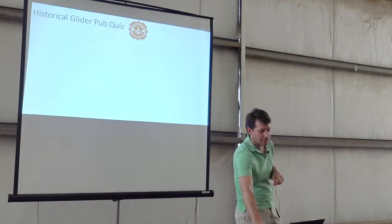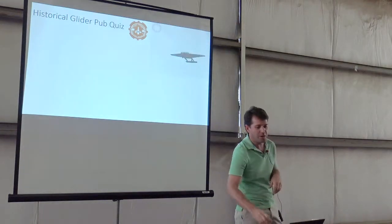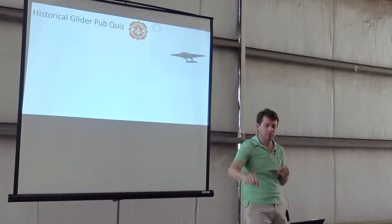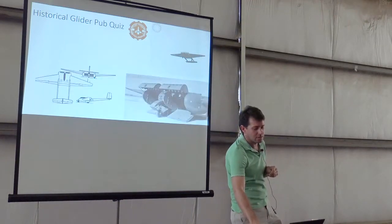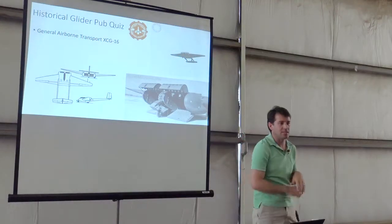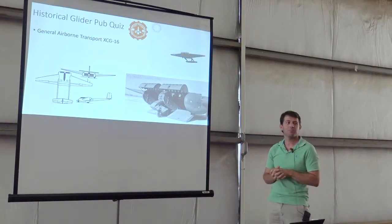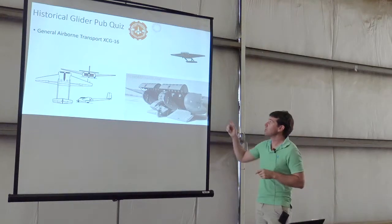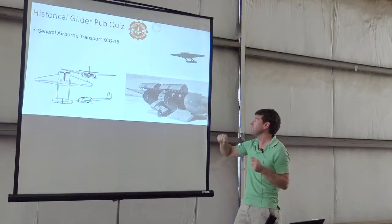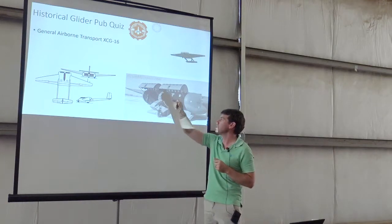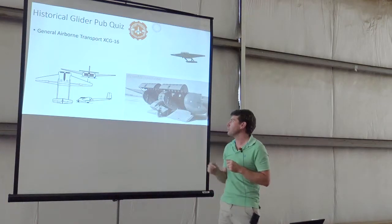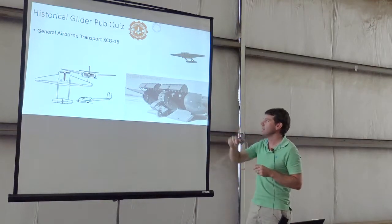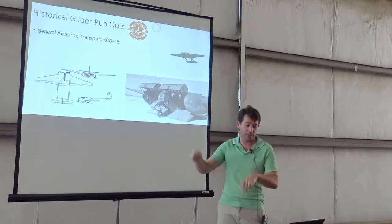Another one, another beer up for grabs. Anyone know what glider that is? It was the XCG-16. So what's interesting about this glider is it's a glider with nice big hatches on the front. What they would do is load cargo in and land in a field, and I'll show you some good videos of this, and then take the cargo. That is a cargo glider.